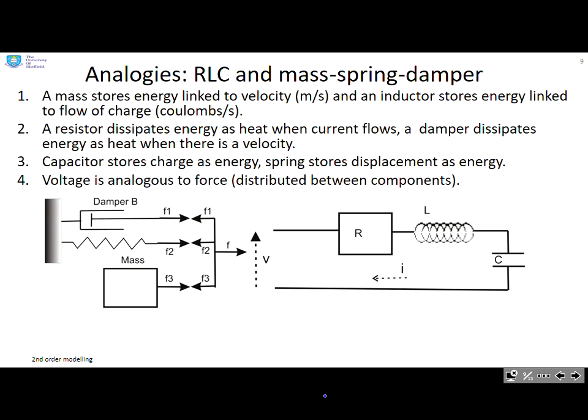Analogies then. Now, a mass stores energy linked to velocity and an inductor stores energy linked to charge. So you can see the mass here and the inductor here are analogous components. A resistor dissipates energy as heat when current flows and a damper dissipates energy as heat when there's a velocity.